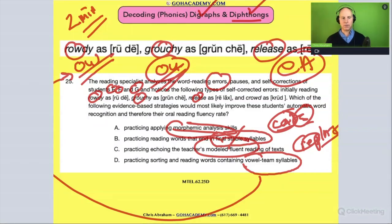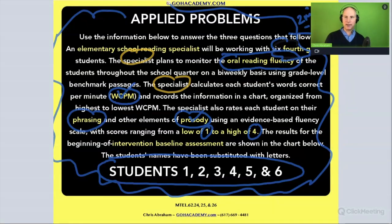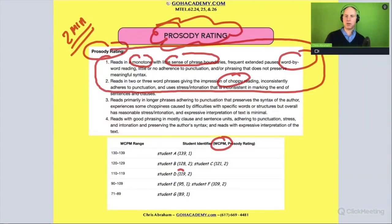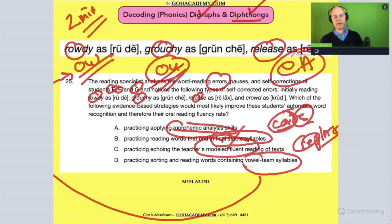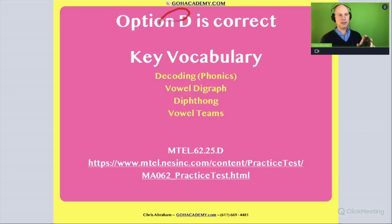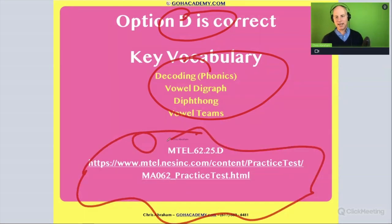How about D — practice sorting and reading words containing vowel teams? That would include vowel digraphs and diphthongs. They need some help with digraphs and diphthongs and going through those vowel patterns. The answer here is D. As soon as you can spot that this is something to do with phonics, you'll be able to get to the right answer.